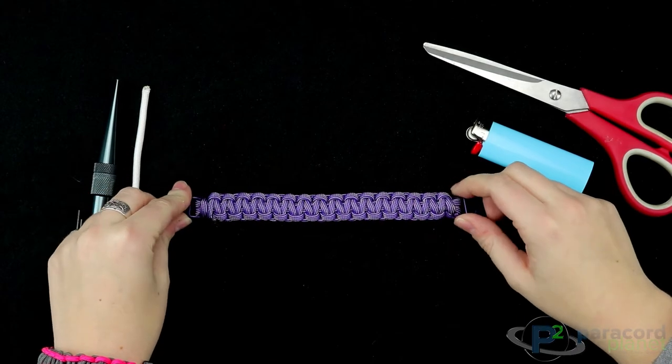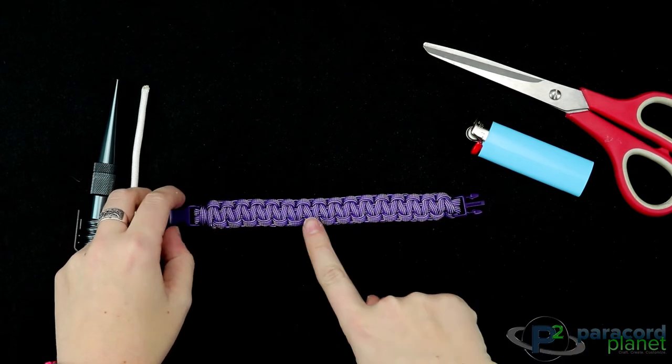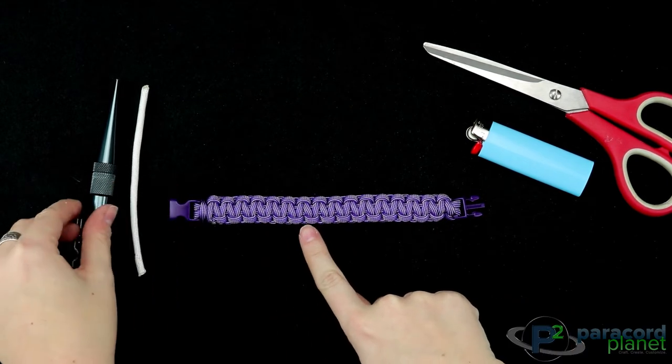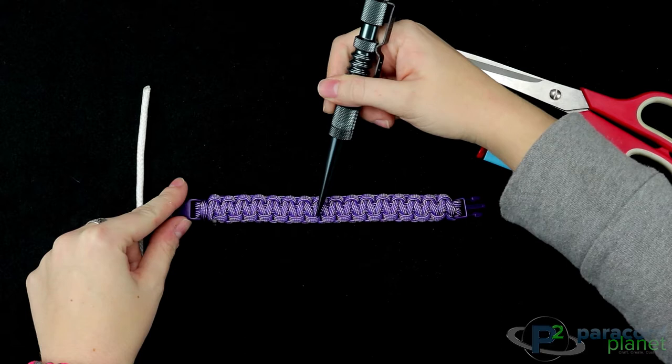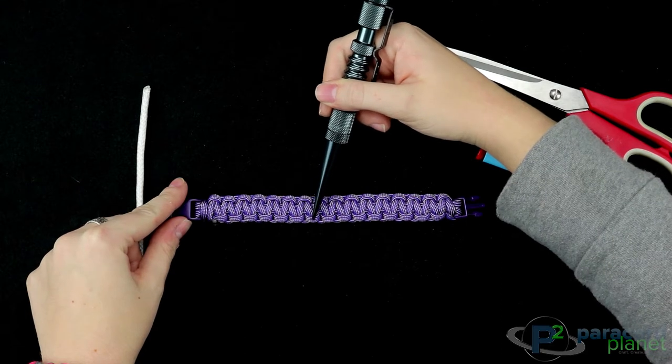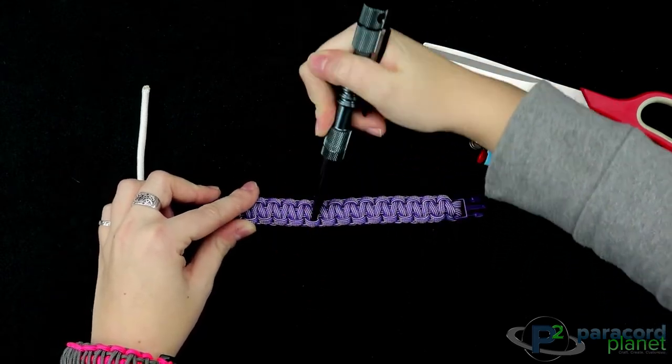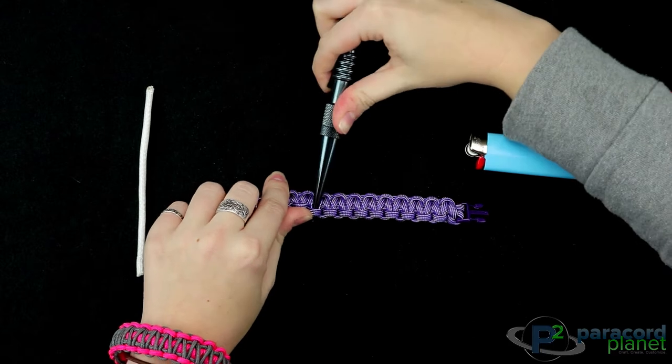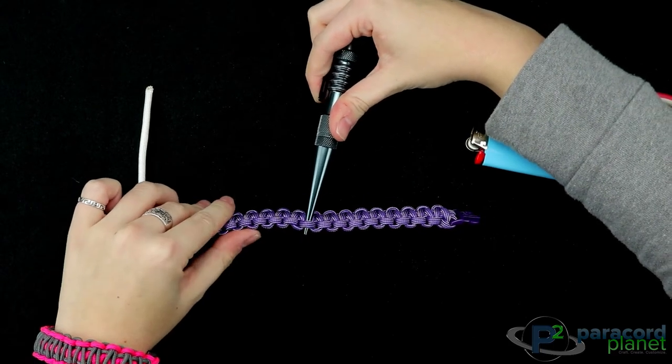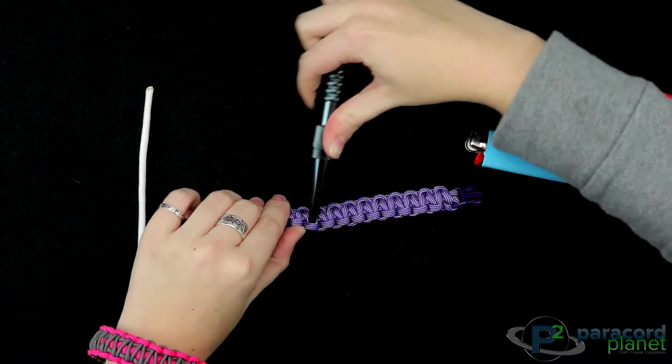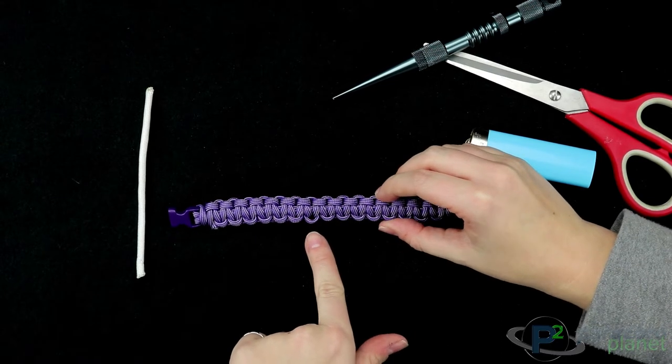So to begin our awareness ribbon weave onto our bracelet, we're first going to look and find the center point. This is where the ribbon is going to start. So you're going to take your knotter's tool or fid, and you're going to find the center. So for me, that's right about here. You're going to take your knotter's tool, and you're going to insert it into the bracelet. So you're going to kind of pull this weave apart.